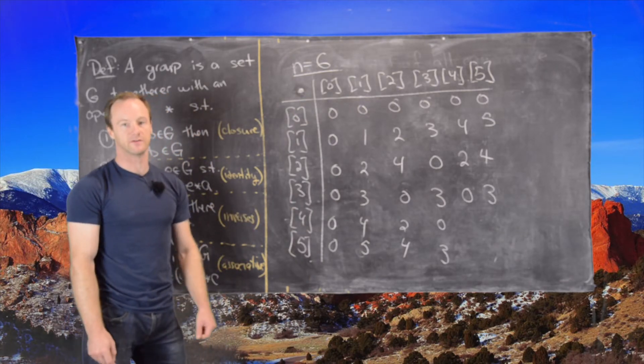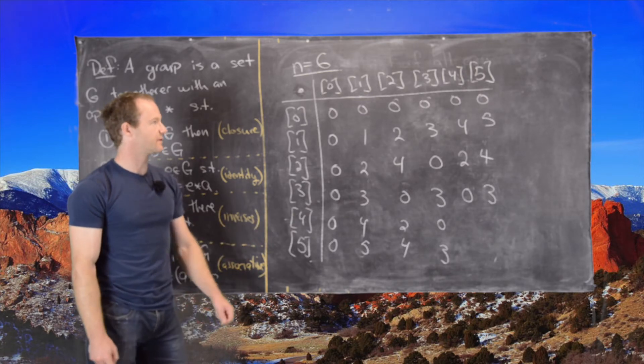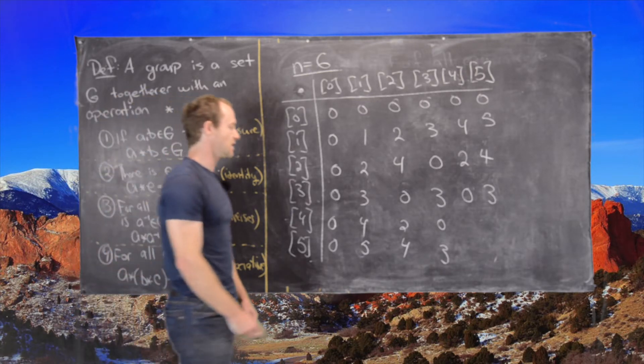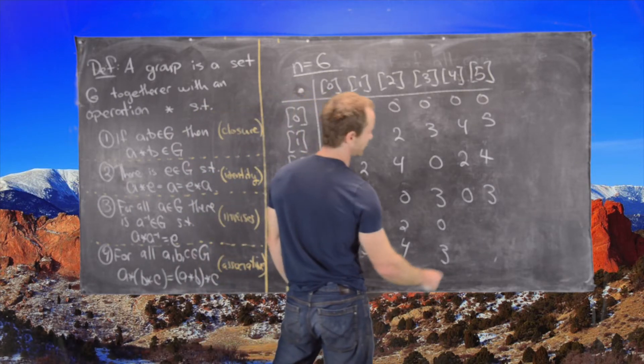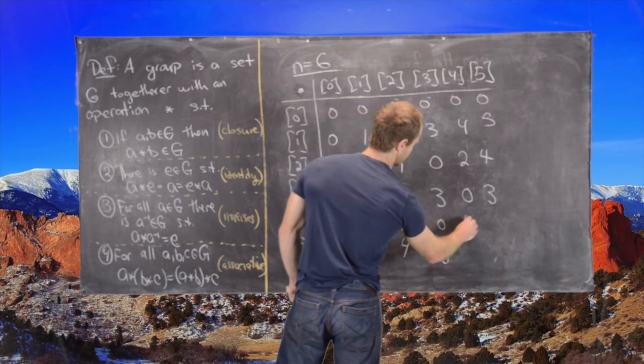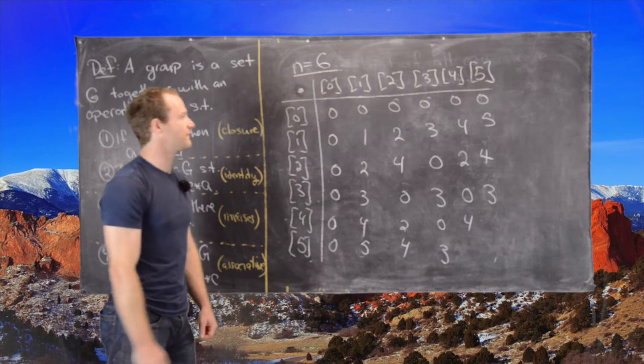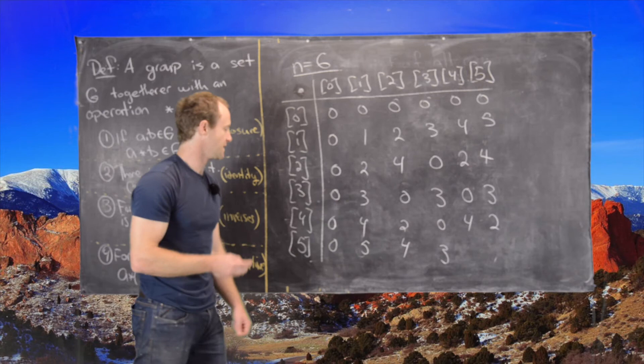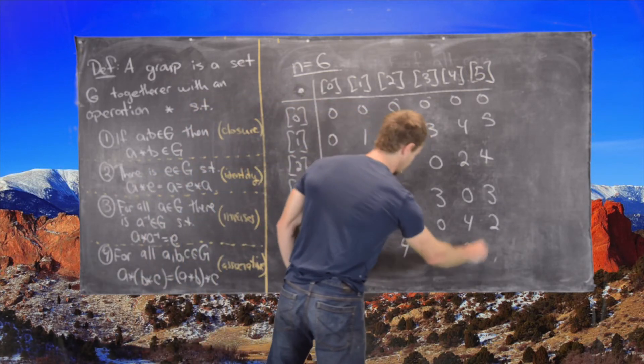So again 3 does not have an inverse. Now we'll do the same thing with 4. So 4 times 4 is 16, which is 4. And then 4 times 5 is 20, which is 2 because it's 18 plus 2. Now we can fill this in.